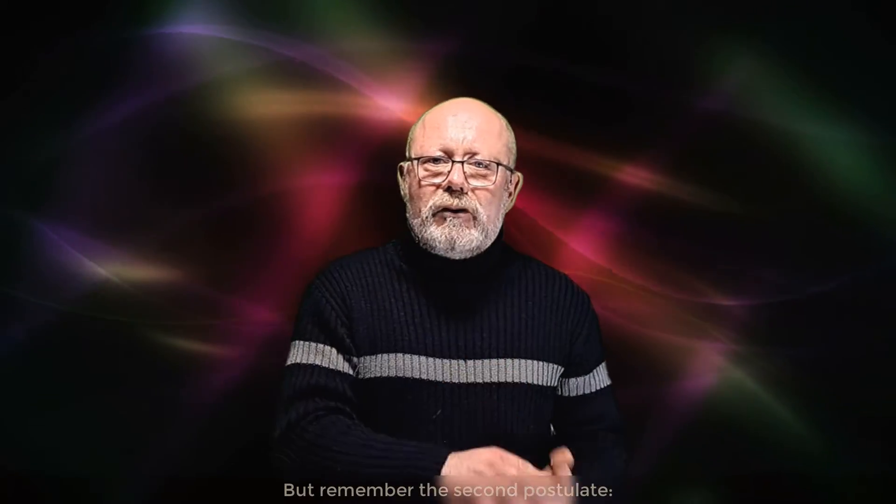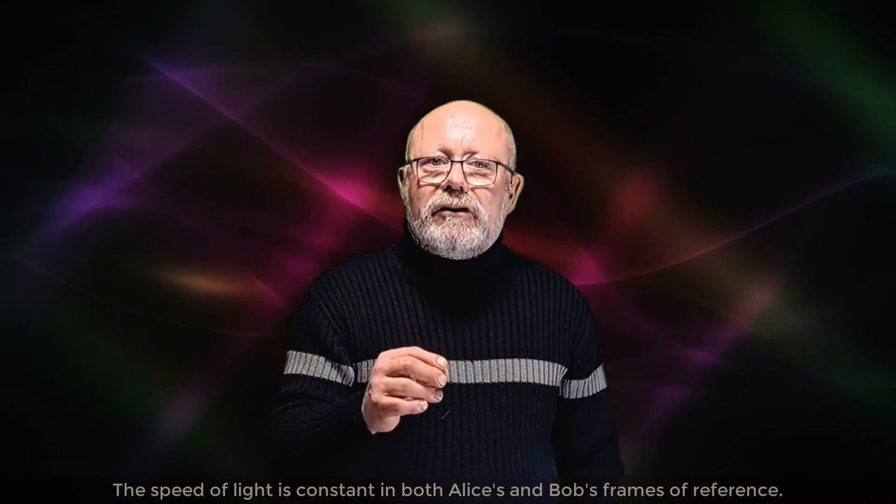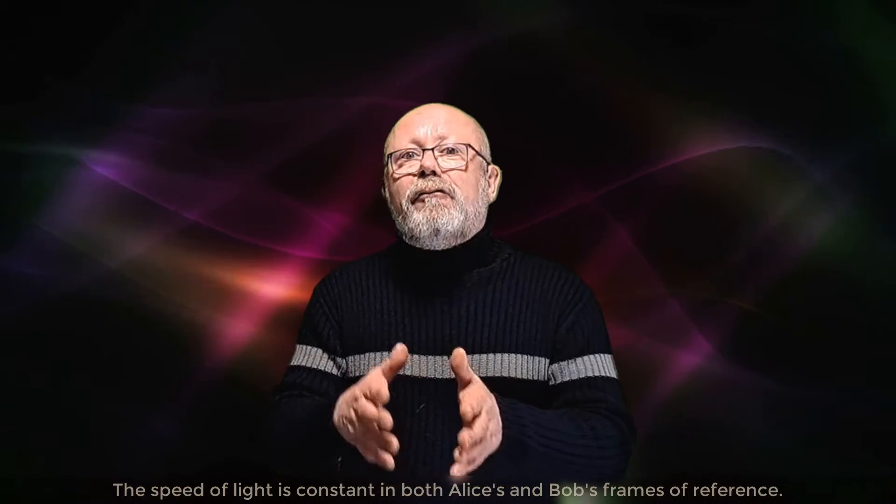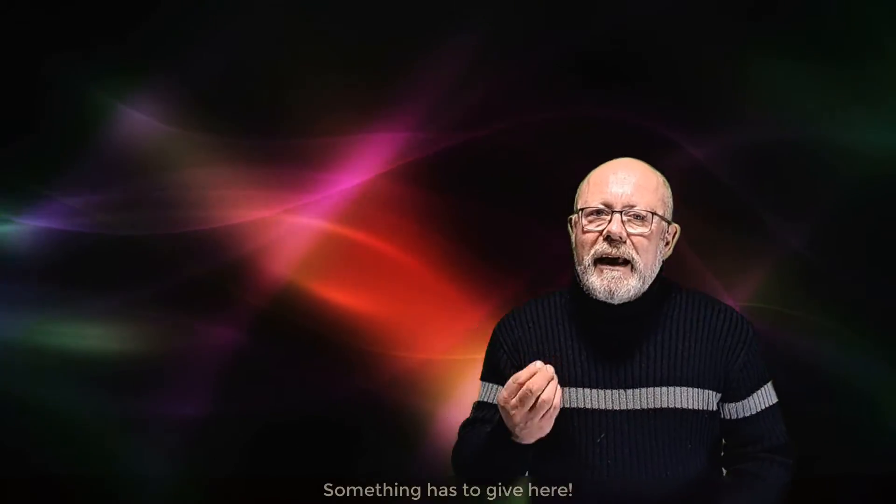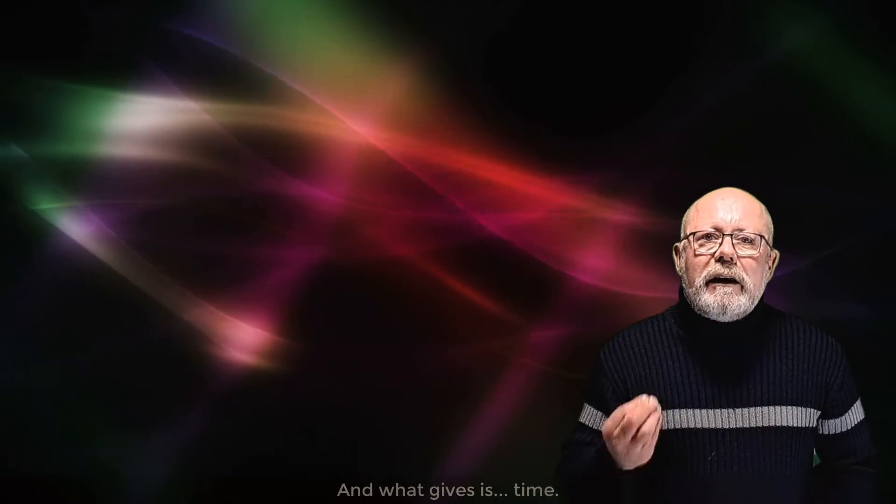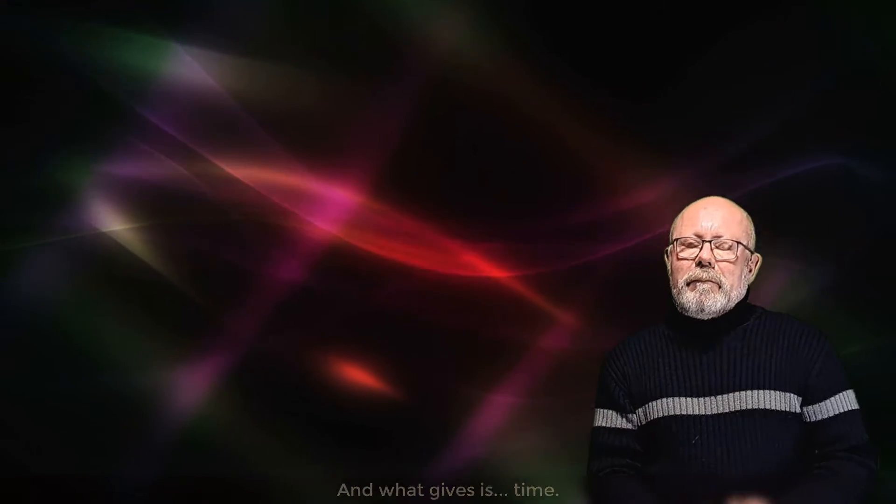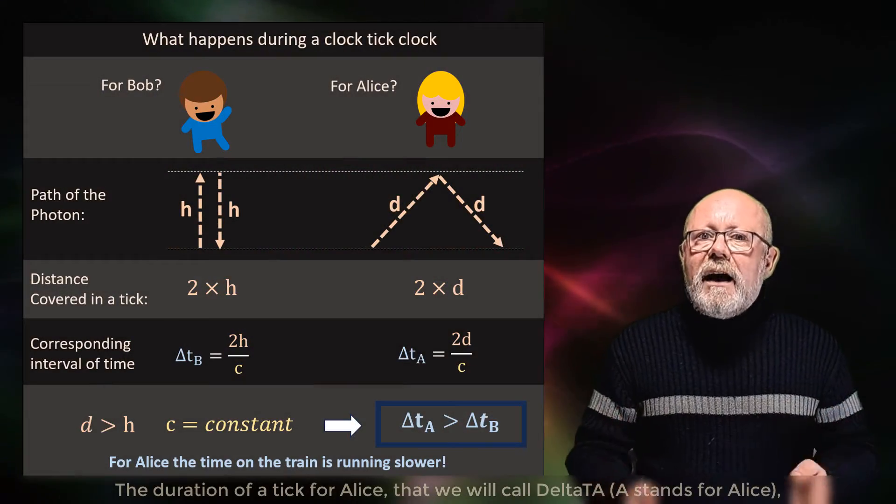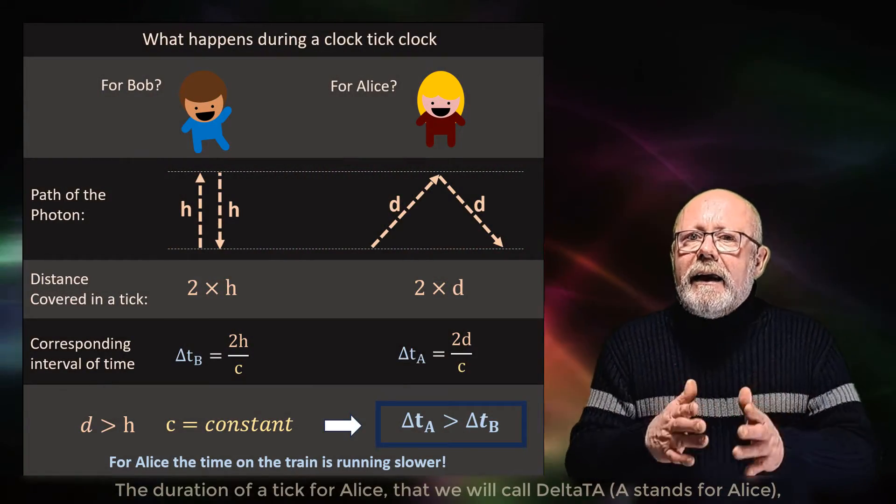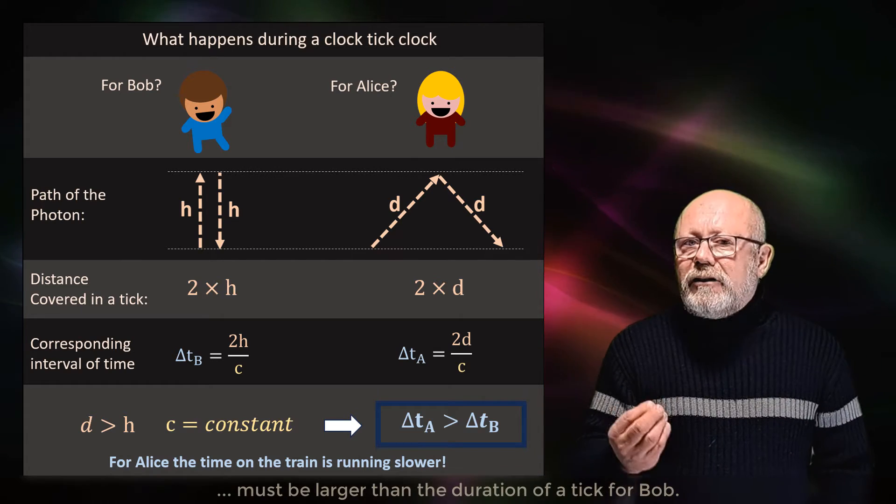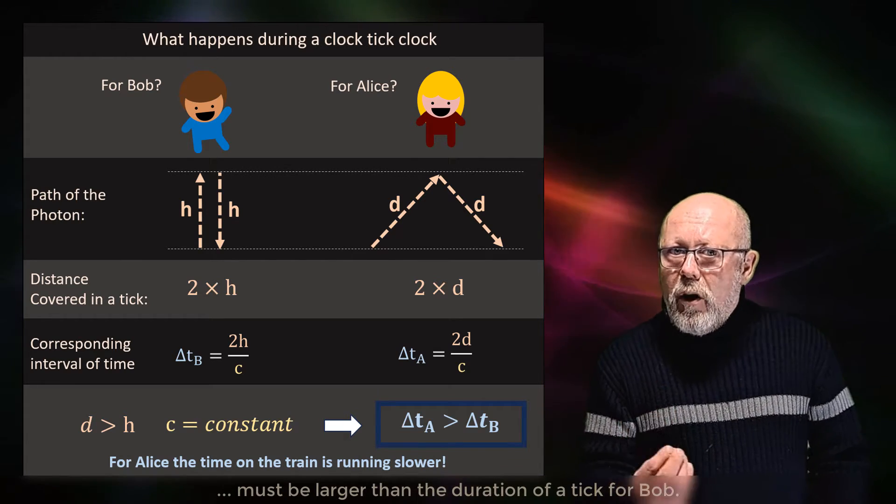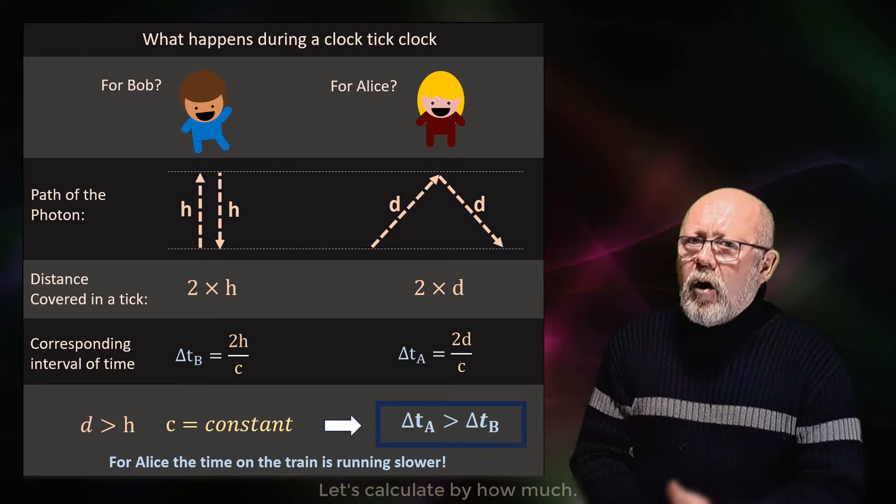But remember the second postulate. The speed of light is constant in both Alice's and Bob's frames of reference. Something has to give here. And what gives is time. The duration of a tick for Alice, that we will call delta t_A, A stands for Alice, must be larger than the duration of a tick for Bob. Let's calculate by how much.